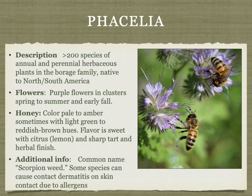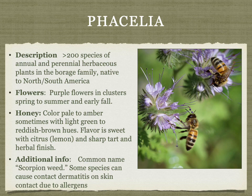Phacelia is a group of plants in the Borage family, commonly planted in wildflower seed blends or pollinator-friendly gardens. It has a long bloom time and bees absolutely love it. The honey is pale to amber, sometimes with a tint of light green or reddish brown. The flavor is sweet, sharp, tart, with an herbal finish and sometimes notes of citrus.